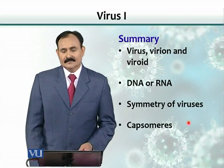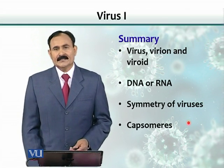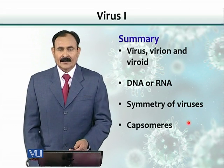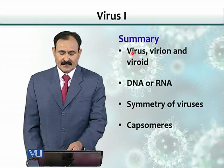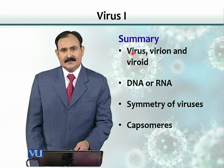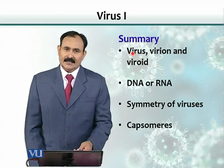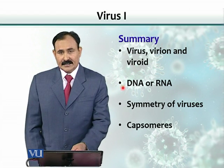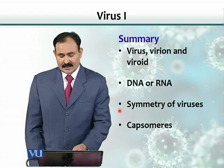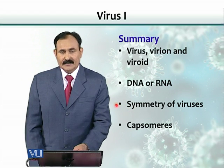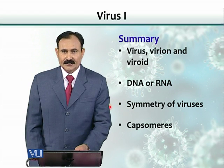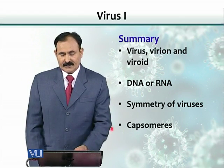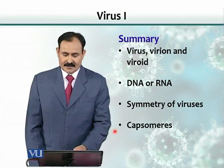In summary, viruses, virions, and viroids are different things. A virus is the one that infects the host cell; when it is outside the host cell, it is called a virion. They contain either DNA or RNA. Symmetry-wise, there are three main groups of viruses, and that symmetry is determined by the arrangement of the capsomeres.